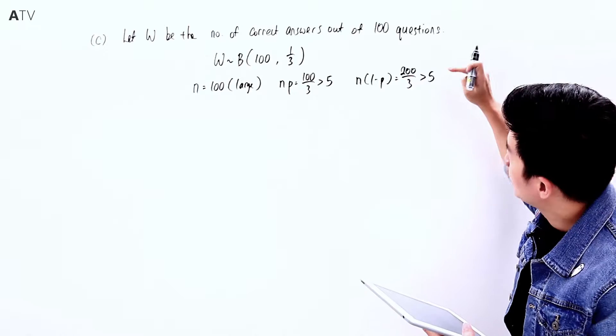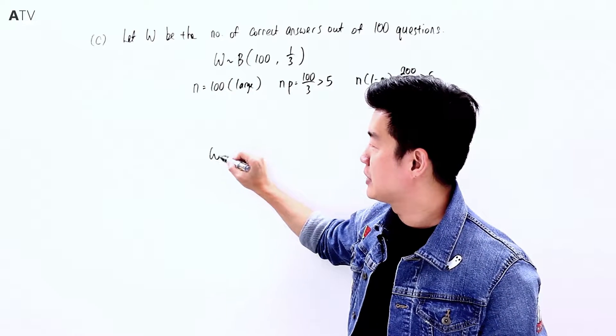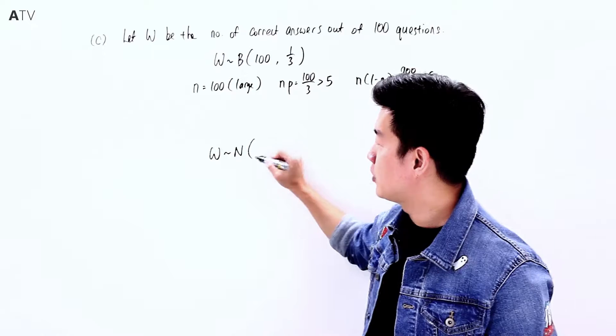Since these conditions are satisfied, we can approximate W with a normal distribution.